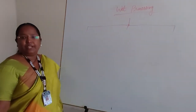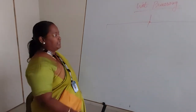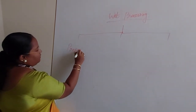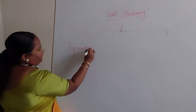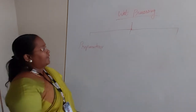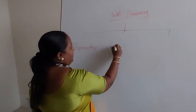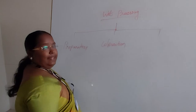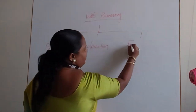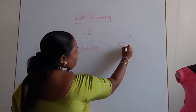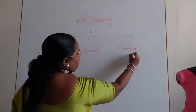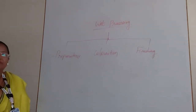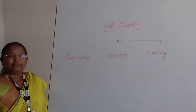We classify wet processing into three segments. The first one is the preparatory process. The second one is coloration. And the third one is finishing. These three processes are very essential for treating the fabrics.